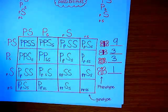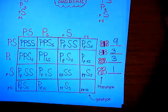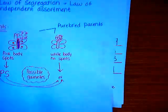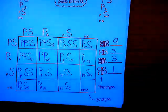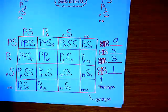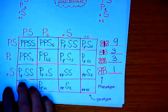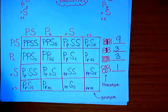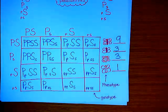This 9:3:3:1 ratio is a standard result when doing this kind of cross starting with purebred parents. You can do a di-hybrid cross and have different outcomes depending on what you start out with for the parents.